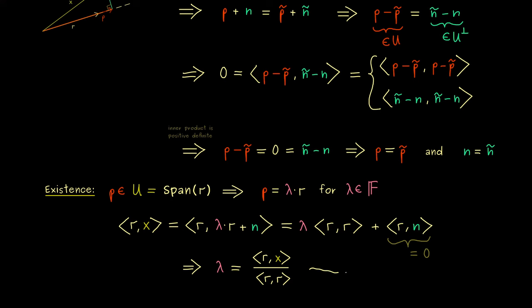So this brings us exactly to the existence of the orthogonal projection. So we can say p is given by this λ factor times the vector r, and n is simply given by x minus this p. So in summary, x is given as p + n, and n is orthogonal to r. So this is simply a calculation you can do again, and then the whole existence is done.